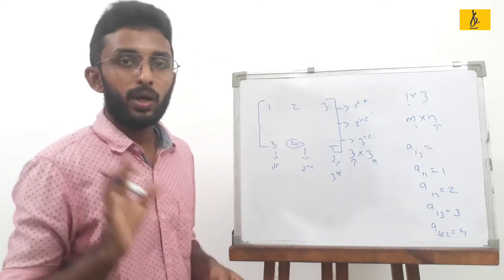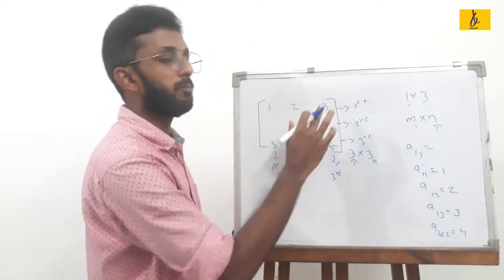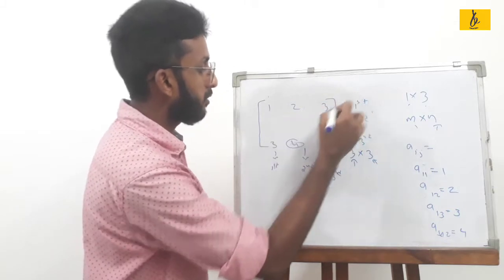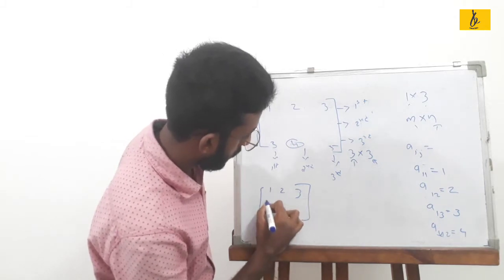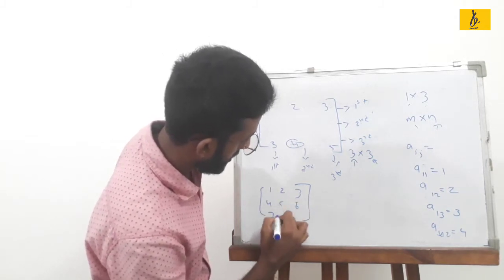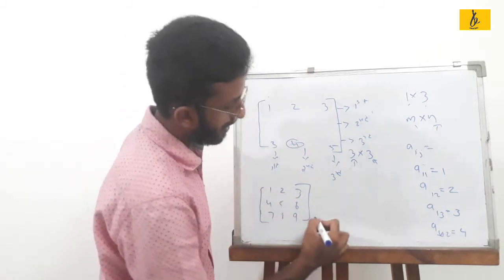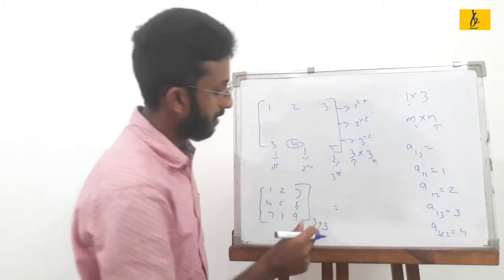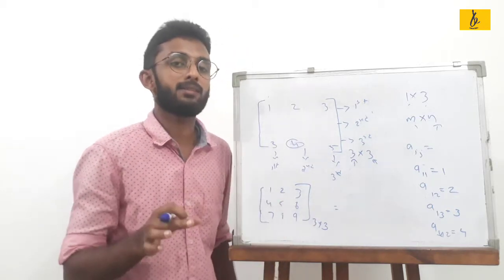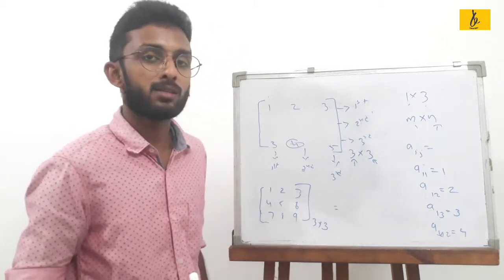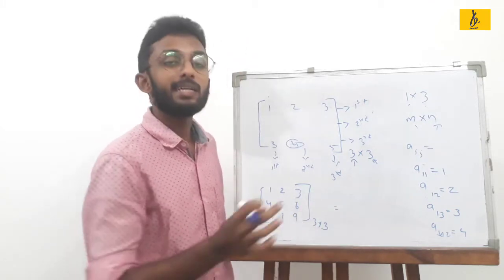Next, the square matrix. The square matrix is called when the number of rows is equal to the number of columns. For example, a matrix with elements 1, 2, 3, 4, 5, 6, 7, 8, 9 has 3 rows and 3 columns — that is a 3 by 3 square matrix. Square matrices include 2 by 2, 3 by 3, 4 by 4, and 5 by 5.